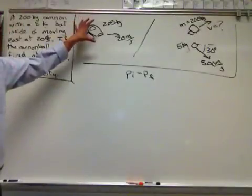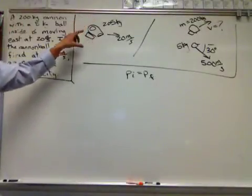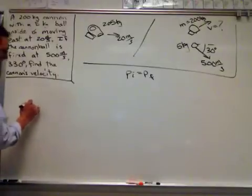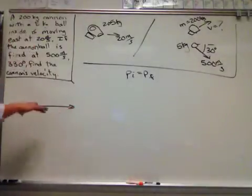At the beginning, this thing is moving at 20 meters per second, 205 kilograms. So you can sketch over here a single vector, all east.